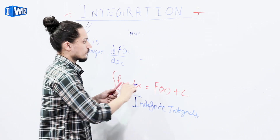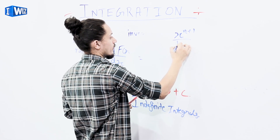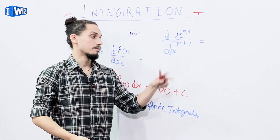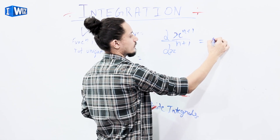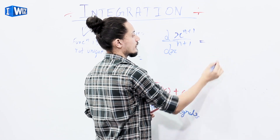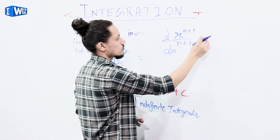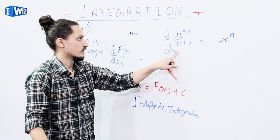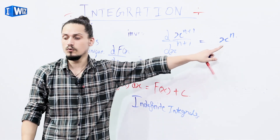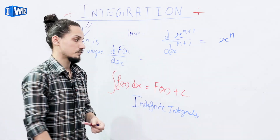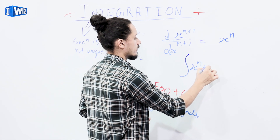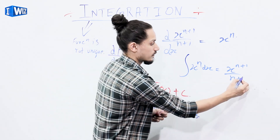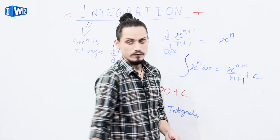For example, if we know that differentiating x^(n+1)/(n+1) gives us x^n, then since integration is the inverse of differentiation, the integration of x^n dx will be equal to x^(n+1)/(n+1) plus C, the constant of integration. This is the power rule for integration.